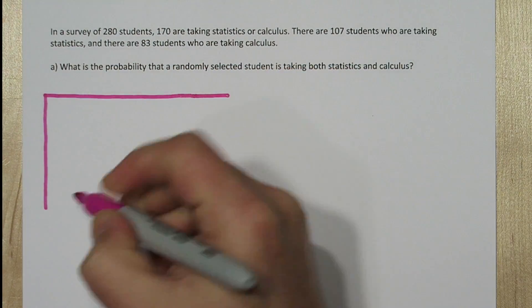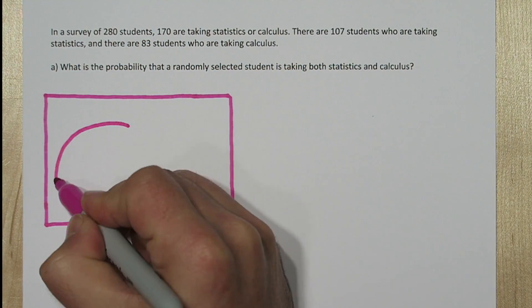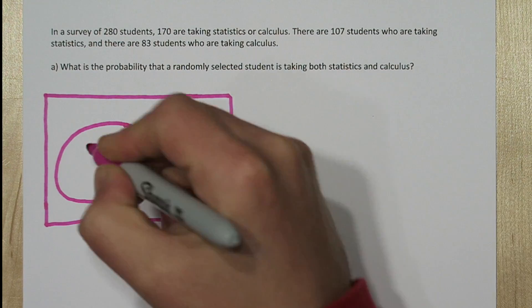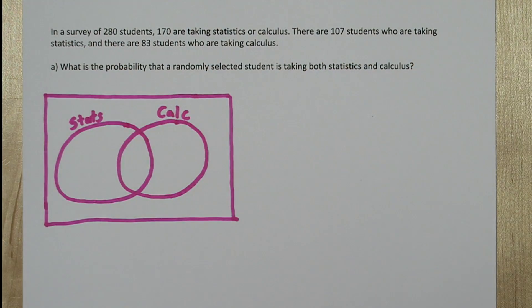I like to solve problems like this with Venn diagrams. So we'll start by drawing a rectangle to represent all 280 students, and we'll make a stats bubble and a calculus bubble.